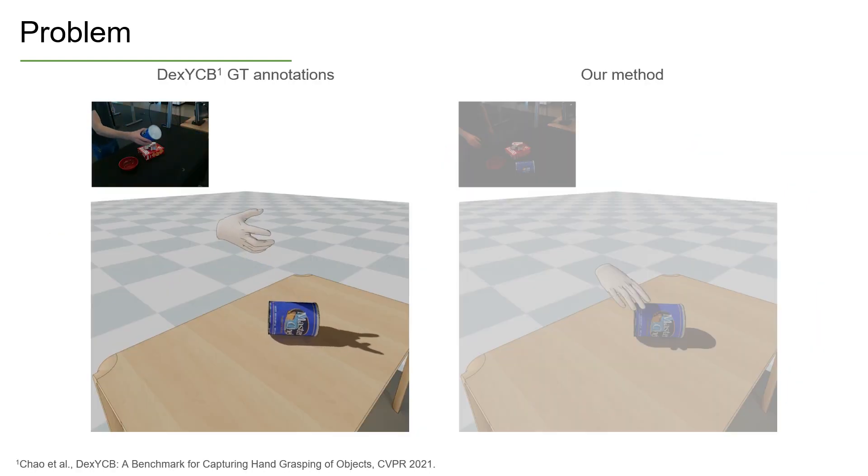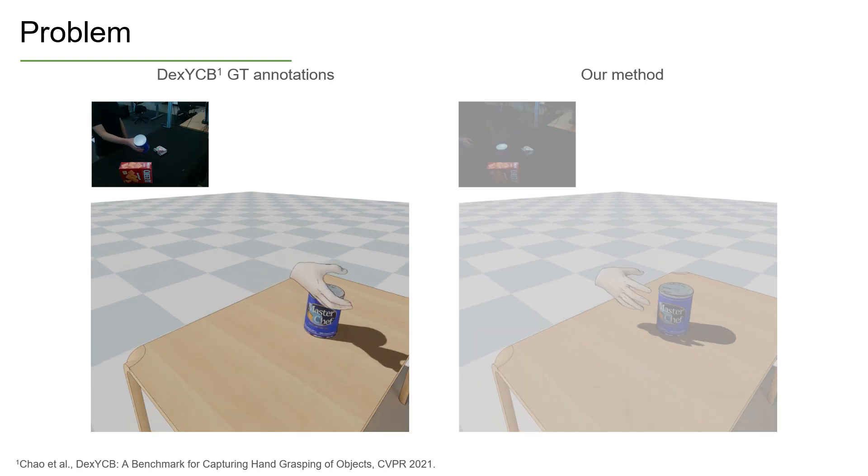The output from existing methods and even annotations of existing datasets often do not lead to stable grasps when placed in a physics simulation.